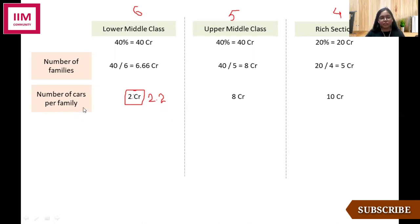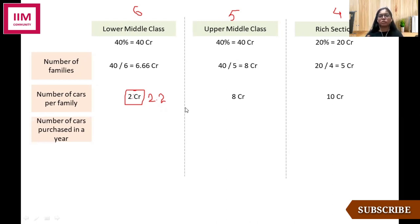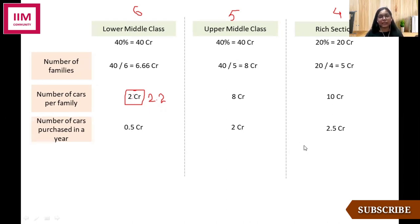Now I've got number of cars per family total, but what I need is the number of cars purchased per family in a year. So I'll assume that every family replaces or exchanges their car every four years — you could also assume five or six years. Working the numbers out gives 0.5 crores, 2 crores, and 2.5 crores as the number of cars purchased in a year across the three segments. You shouldn't stop here and just sum these up to give the answer, because the question is to calculate the number of tires manufactured in a year.